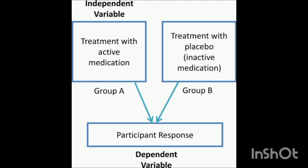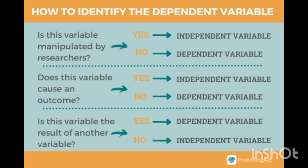Another example: Group A is treated with active medication and Group B is treated with inactive medication. The dependent variable is the participant's response — what the response will be depending on whether you are giving them medicine or not.